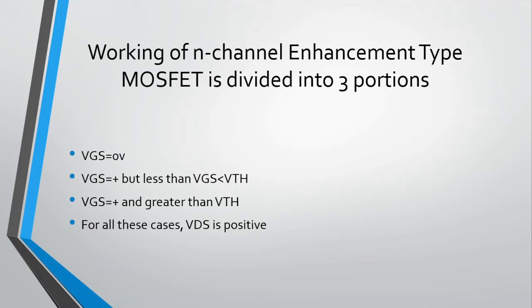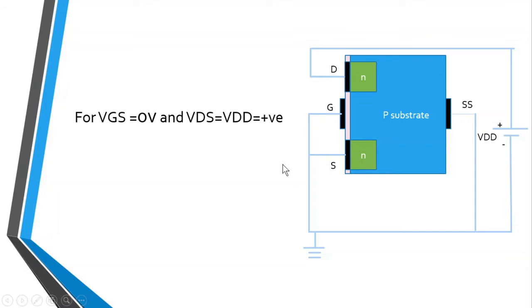I have divided the working of the N-channel enhancement type MOSFET into three portions: first, for VGS equal to zero volts; second, for VGS equal to some positive value but less than the threshold voltage; and third, for VGS equal to some positive value greater than the threshold voltage. For all three cases, the drain-to-source voltage VDS will be positive.